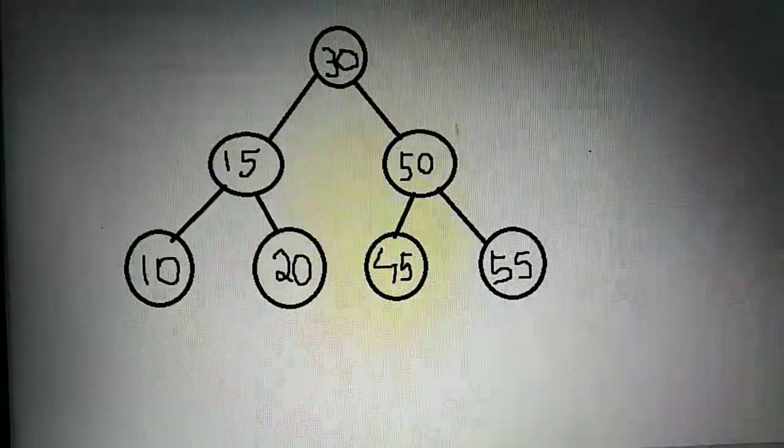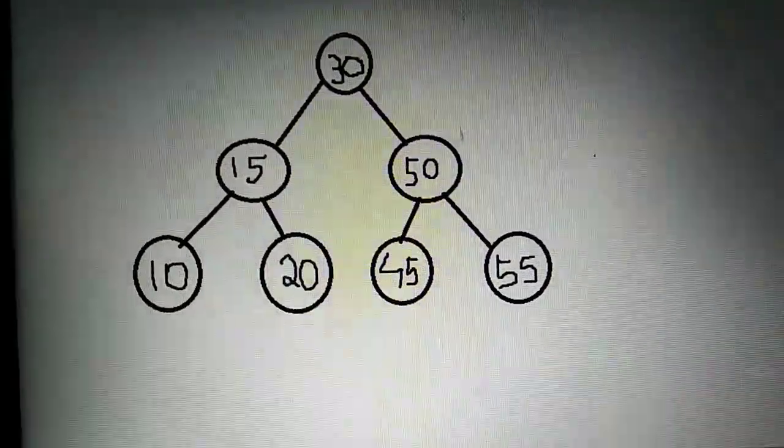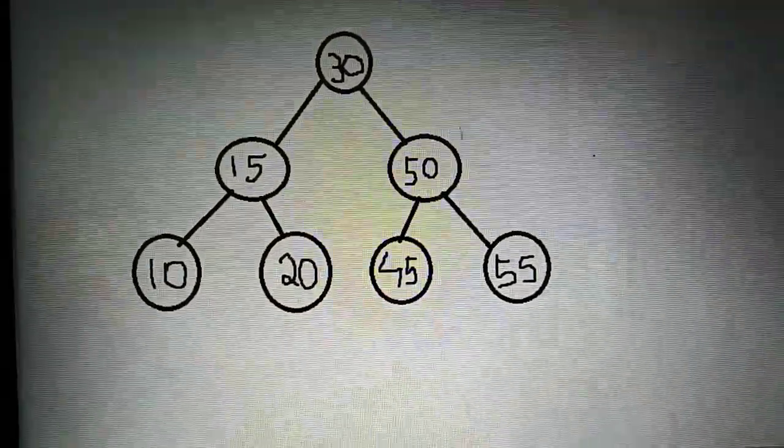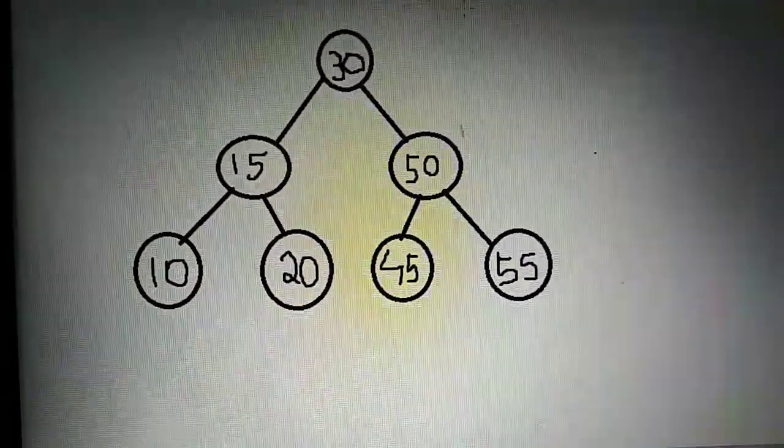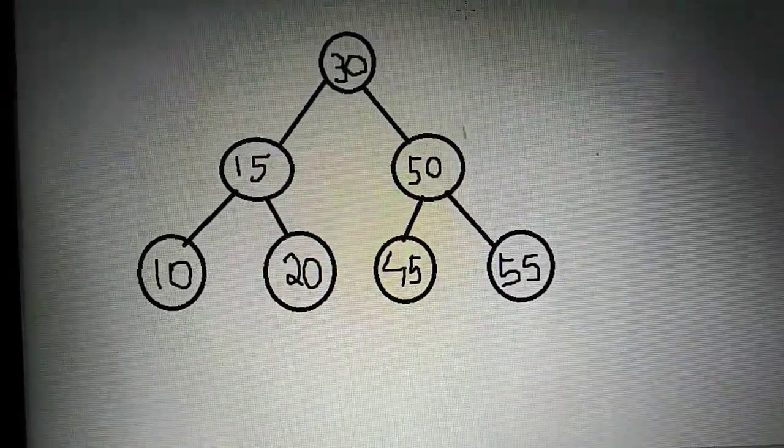The next greater element is 15, so the difference between 15 and 10 is 5. Now if you calculate all the differences between the nodes of this binary search tree,